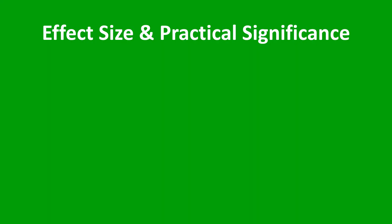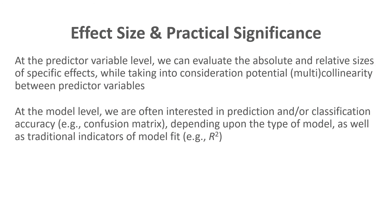For effect size and practical significance, this also depends on the type of model used. At the predictor variable level, we can evaluate the absolute and relative sizes of specific effects, consider multicollinearity, and apply traditional statistical controls. At the model level, we are often interested in prediction or classification accuracy, where a confusion matrix may come into play, along with traditional indicators of model fit.